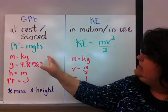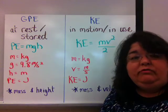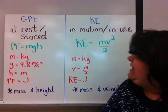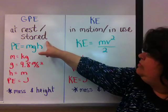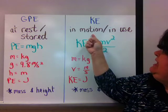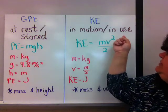Gravitational potential energy is just one form of potential energy that we'll talk about. And it means that the object is at rest or stored. Kinetic energy means the object is in motion or in use.